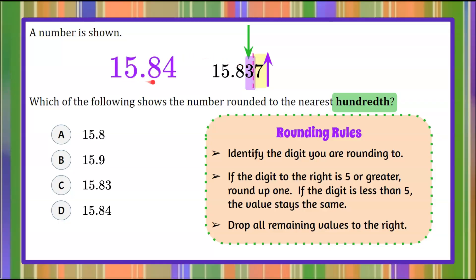This gives us 15 and 84 hundredths. When we round to the hundredth, the hundredth digit is our last place value. We can see that is solution D.